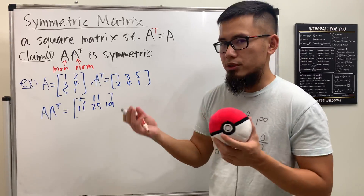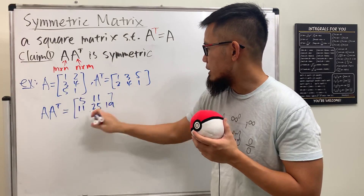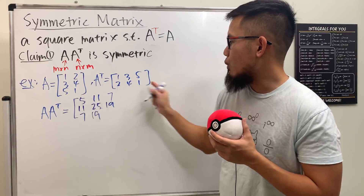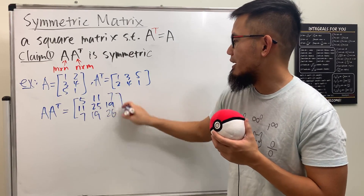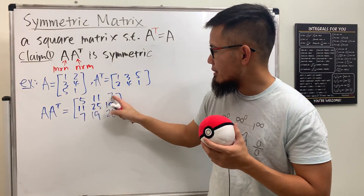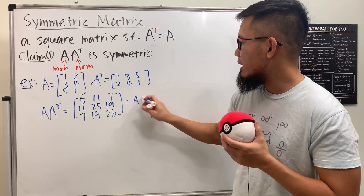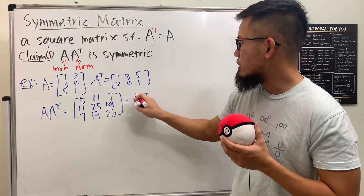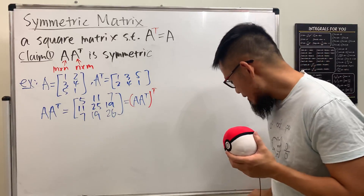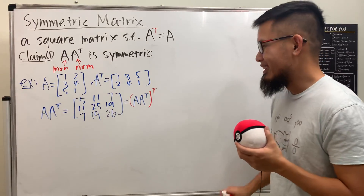Finishing the last row: 5 + 2 = 7, then 15 + 4 = 19, and 25 + 1 = 26. Have a look — if you do the transpose of this result, the off-diagonal entries match up: the (1,2) equals (2,1), and so on. So this really shows that A times A transpose equals its own transpose, making it symmetric.